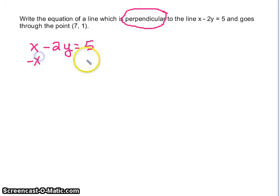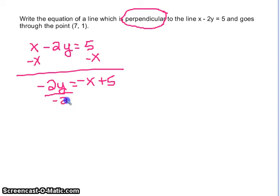I'm going to subtract x from both sides, and I get negative 2y equals negative x plus 5. Divide everything by negative 2, and I get y is equal to 1 half x, or x over 2, minus 5 halves. Now, the only thing I need out of this is the slope. I'm not worried about what my y-intercept is.